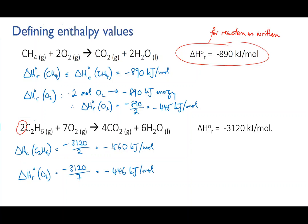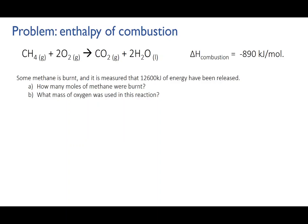So let's try a problem using that methane equation. We burn some methane and measure that 12,600 kilojoules of energy are released. First, let's calculate how many moles of methane must have been burnt to produce that much energy. And secondly, what mass of oxygen would have been used in that reaction. Let's take part A first.